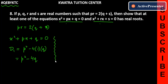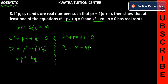Similarly, for the second equation X squared plus RX plus S equals 0, we find D2. D2 will be R squared minus 4 times 1 times S, so D2 equals R squared minus 4S.